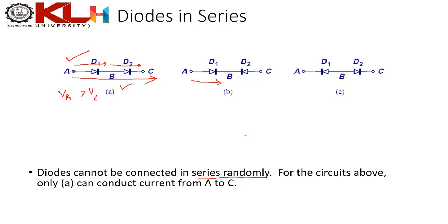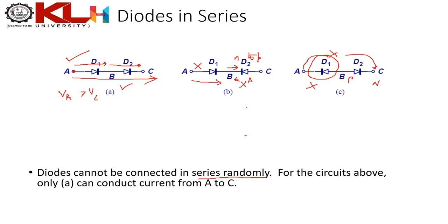Diode D1 allows current from A to B, but current from B to C through a reversed D1 is not possible — current flows only from p to n, not n to p. Similarly if D1 is oriented to block A→B, even if D2 allows B→C, the net flow from A to C is not possible. You must be very careful that all diode directions are aligned for the intended current direction.